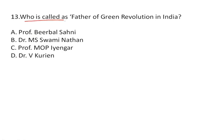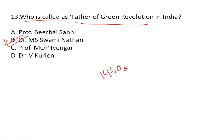Who is called the father of the Green Revolution in India? It is Dr. M.S. Swaminathan. He is the father of the Green Revolution in India, while Norman Borlaug is the father of the Green Revolution in the world. The Green Revolution occurred in the 1960s — please remember.